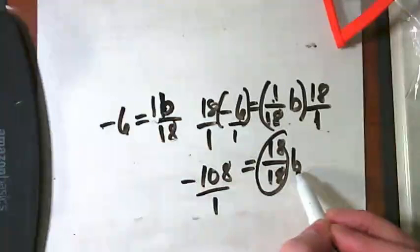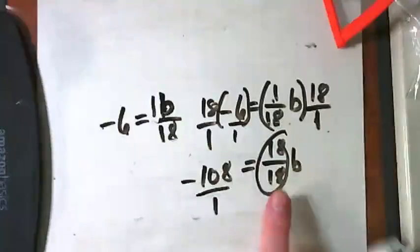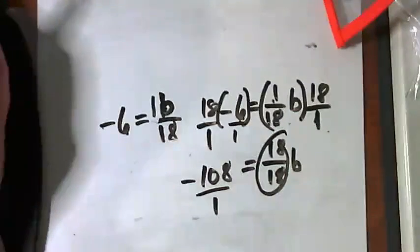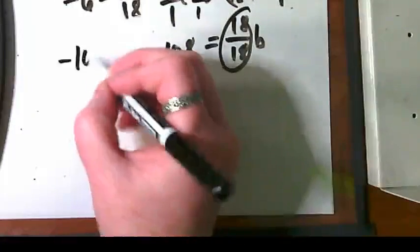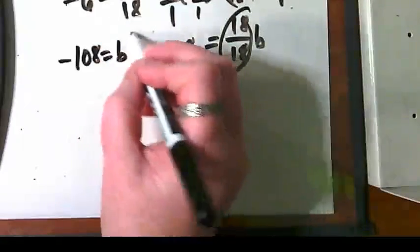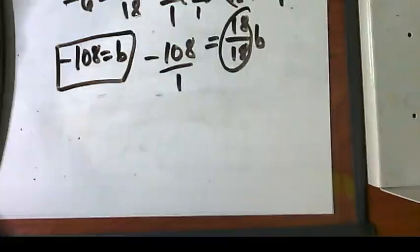It's the variable by itself. As soon as I have something that equals 1 with it, it is by itself. And I also would not write this negative 108 over 1. I would just write negative 108 equals B. That's what our work typically looks like. We cut to that shortcut.